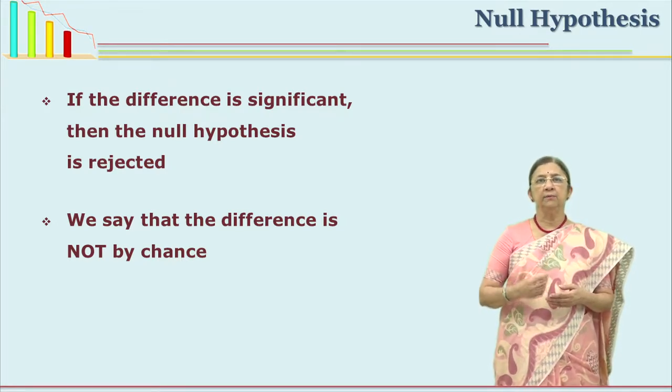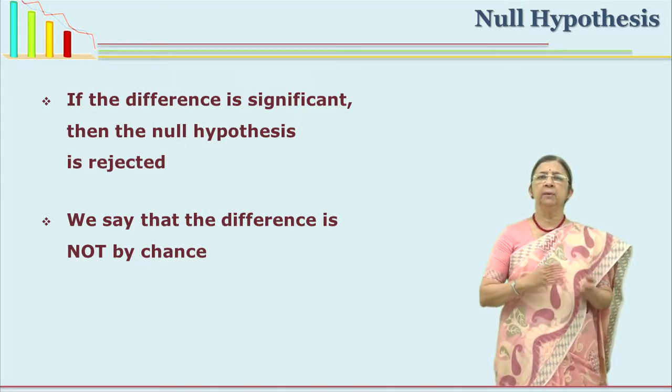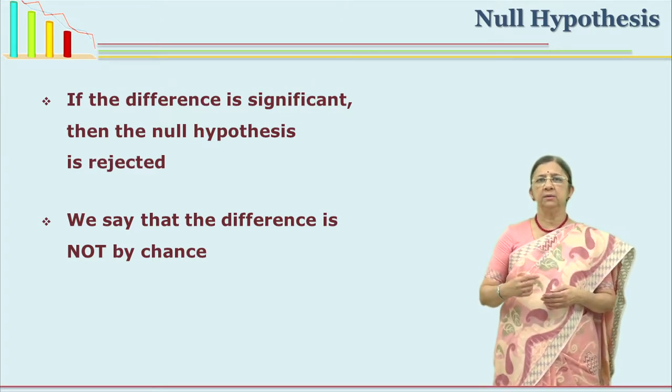Now we can say with confidence that there is a true difference between the pre and post stage, between the experimental and control group. We also say that if at all there is a difference it is by chance. We have already seen what is the confidence level or confidence interval. Generally in statistics we use 95% confidence level or 99% confidence level. When we are rejecting a null hypothesis at 95% level, we are saying that there may be a 5% chance of this not being true.